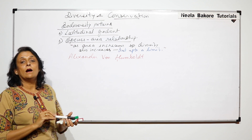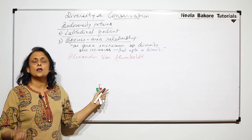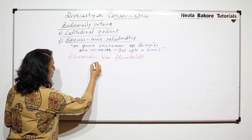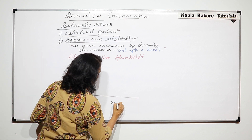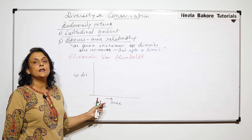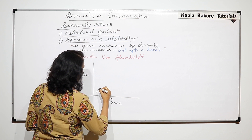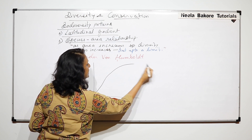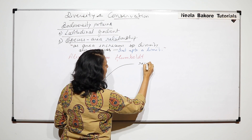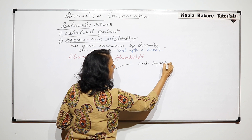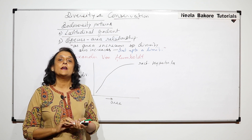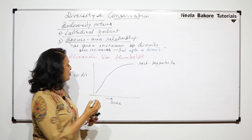He gave this relationship in two ways. When we plot a graph of area versus species diversity in a simple manner, as we go on increasing the area the species diversity increases and ultimately becomes more or less steady. He said the normal graph is a rectangular hyperbola. But when the same information was interpreted using log, it came out to be a straight line.